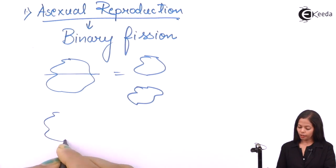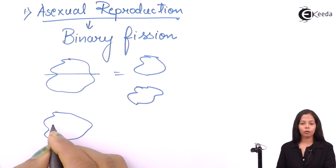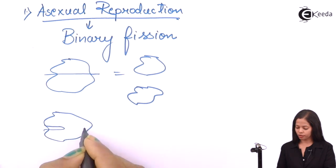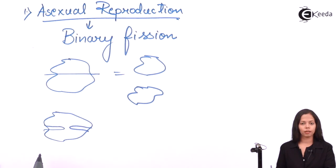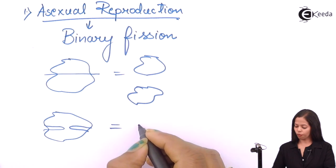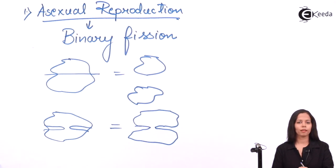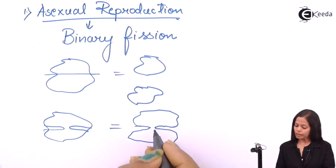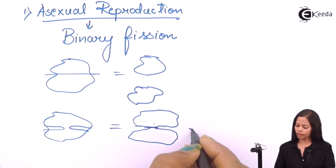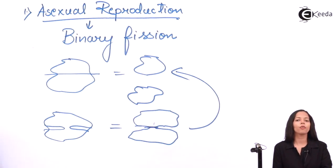How does this process occur? Initially, amoeba carries out inward constriction. This results in the formation of a structure like this. Gradually, this constriction meets, finally resulting in the formation of two amoeba. This is the process of binary fission.